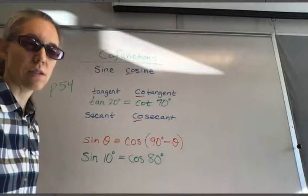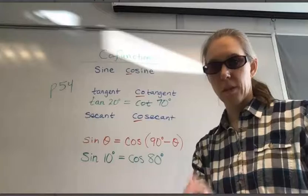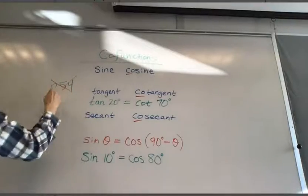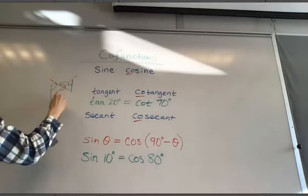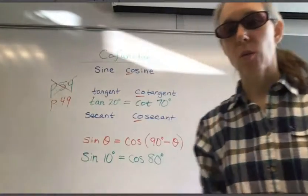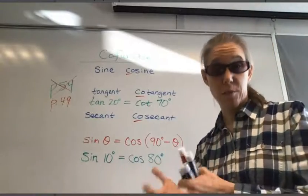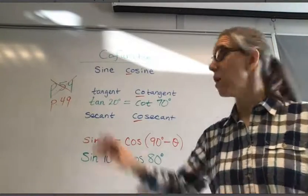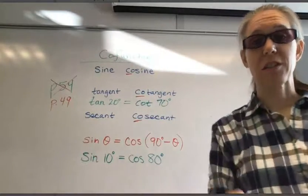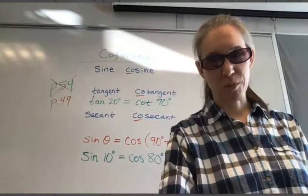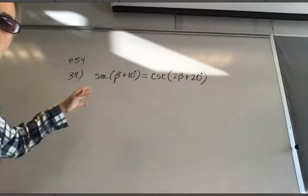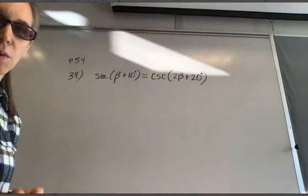Let's do a problem. A correction first: the co-function theory is on page 49, not page 54. We will now do a problem from page 54. Page 49 is where you'll find the theory for co-functions, and next I'll set up problem number 34 from page 54.